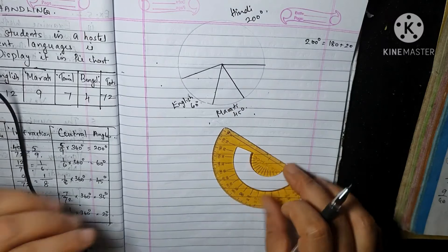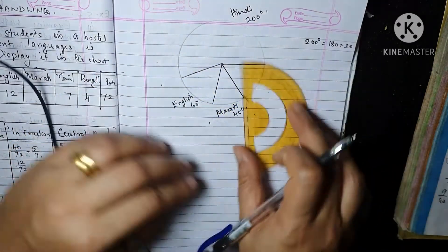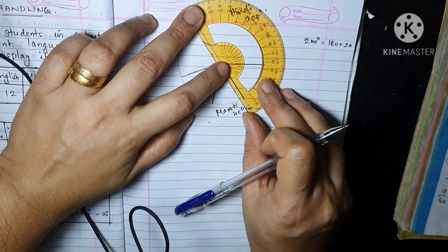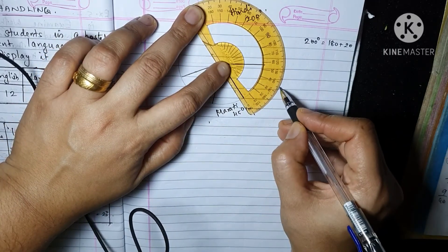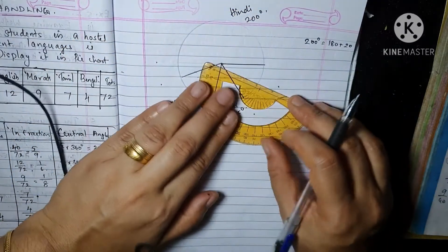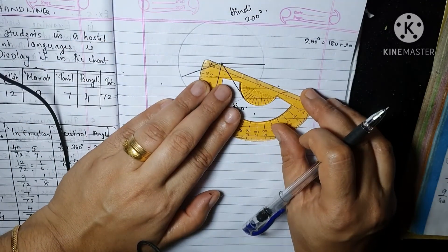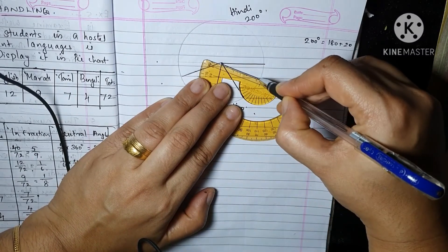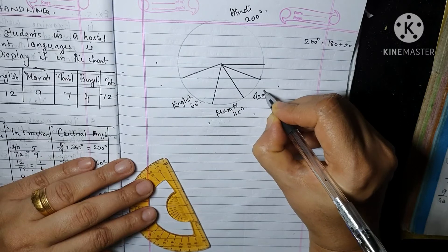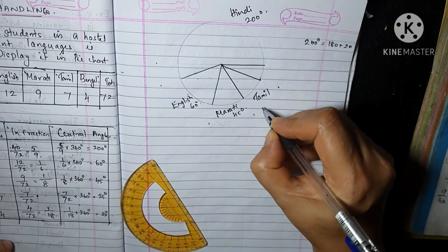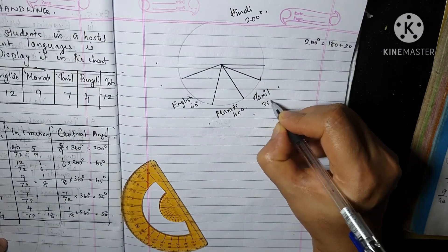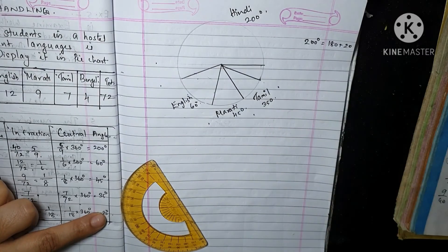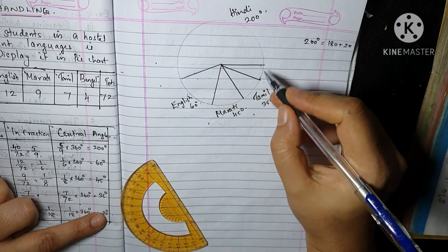Next, Tamil is 35 degrees. Adjust and draw Tamil at 35 degrees. In other words, Bengali is 20 degrees — Bengali is 20 degrees. The pie chart is now complete.